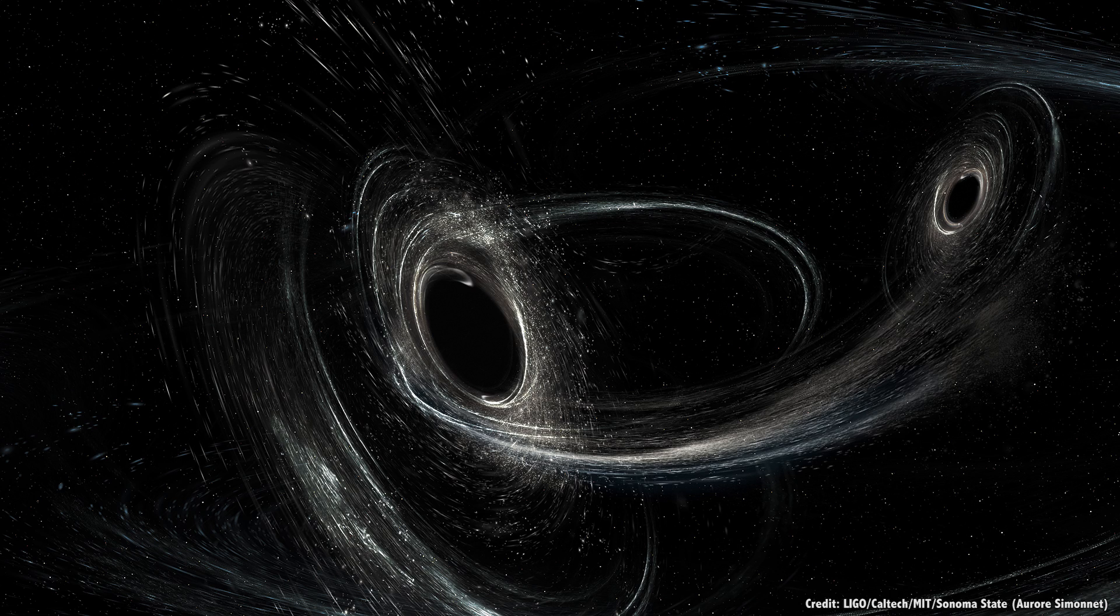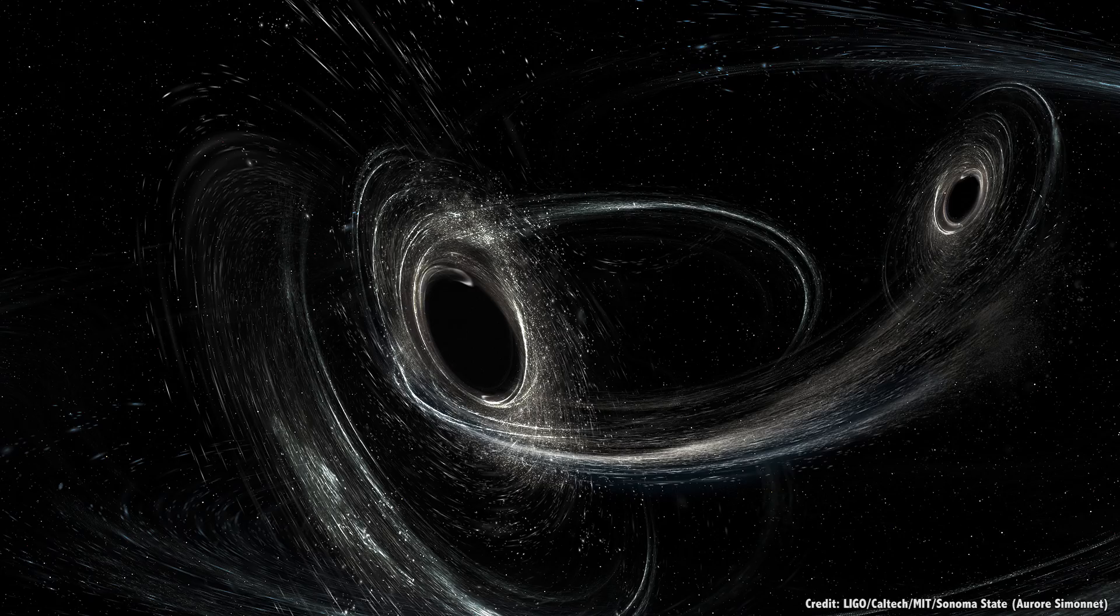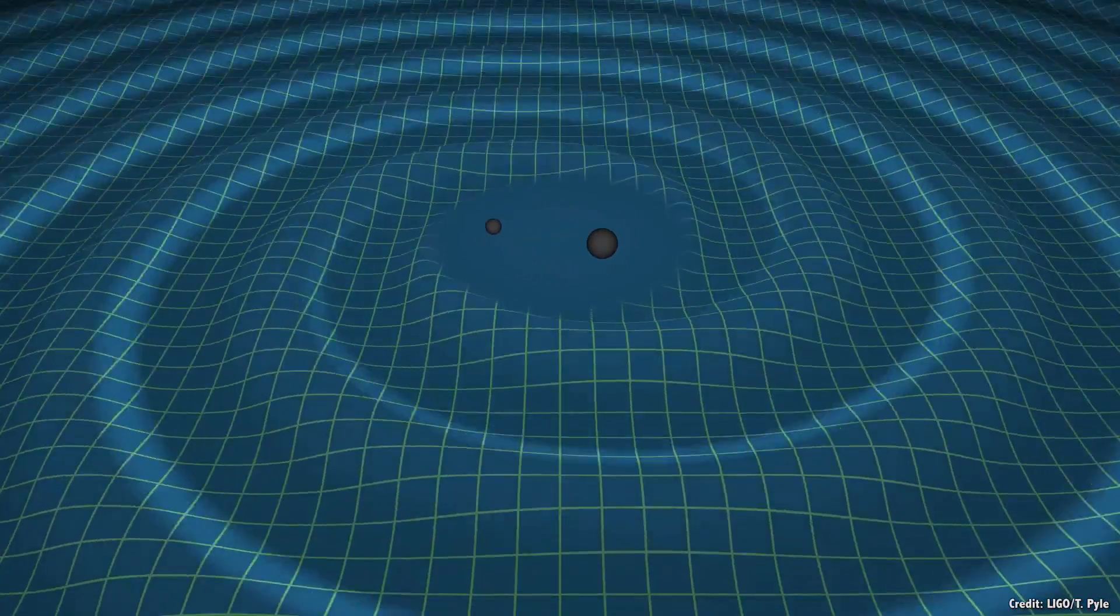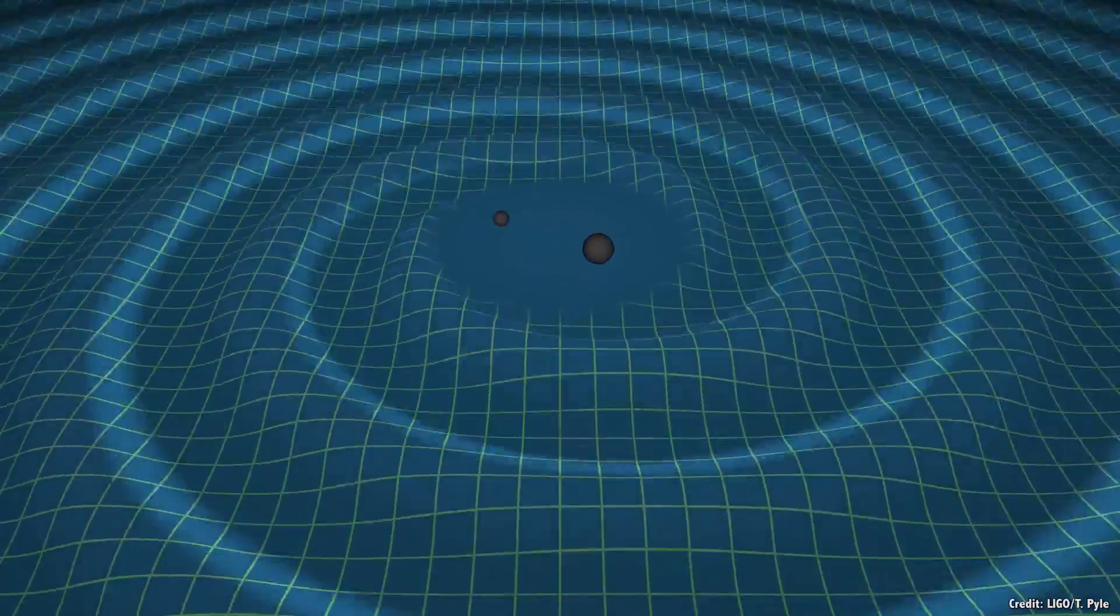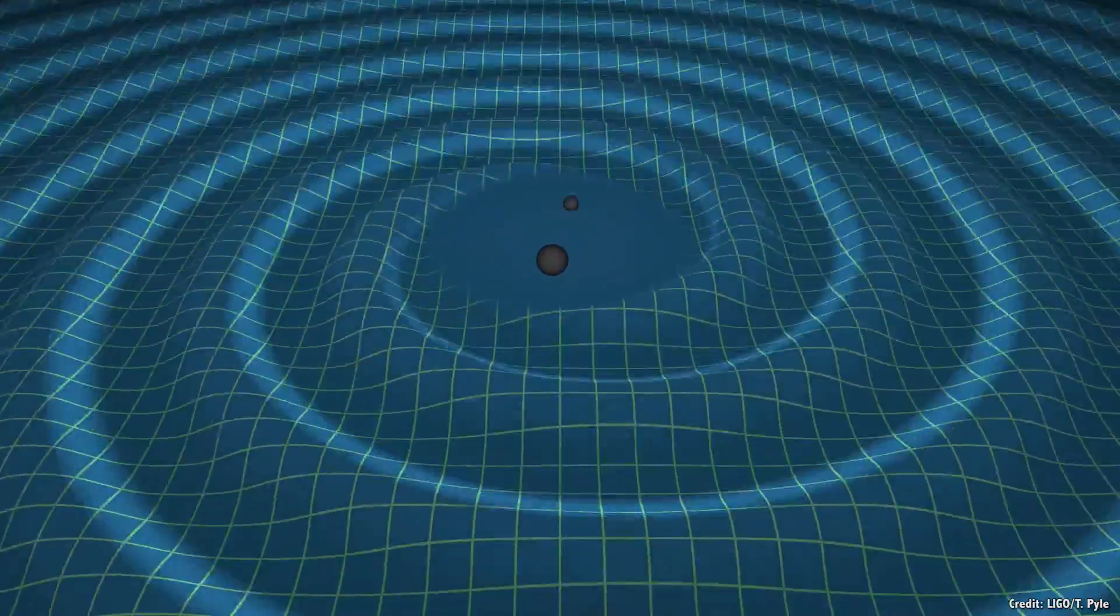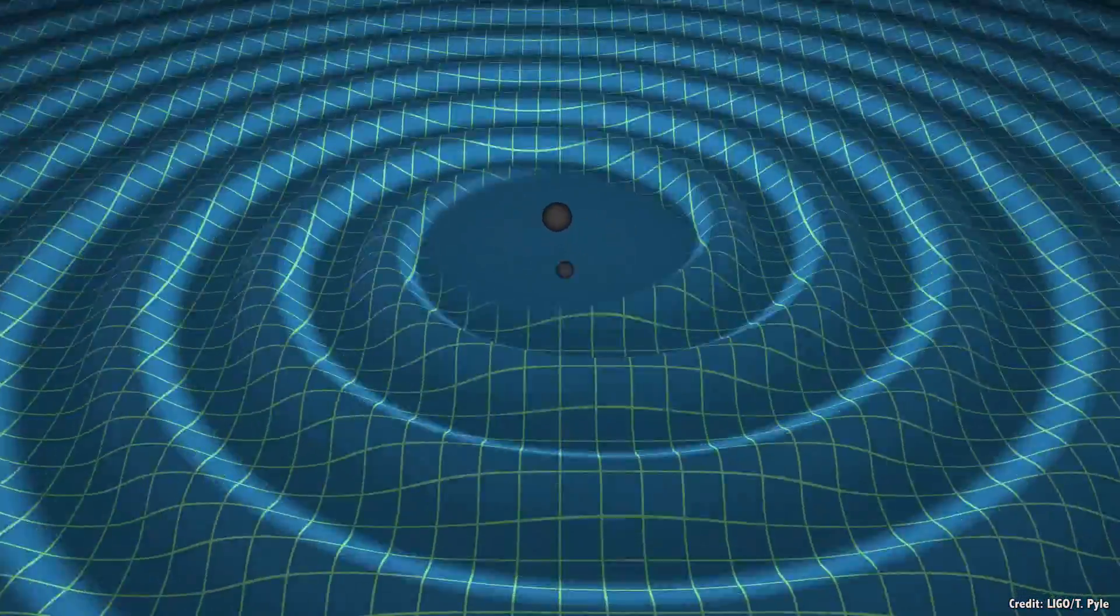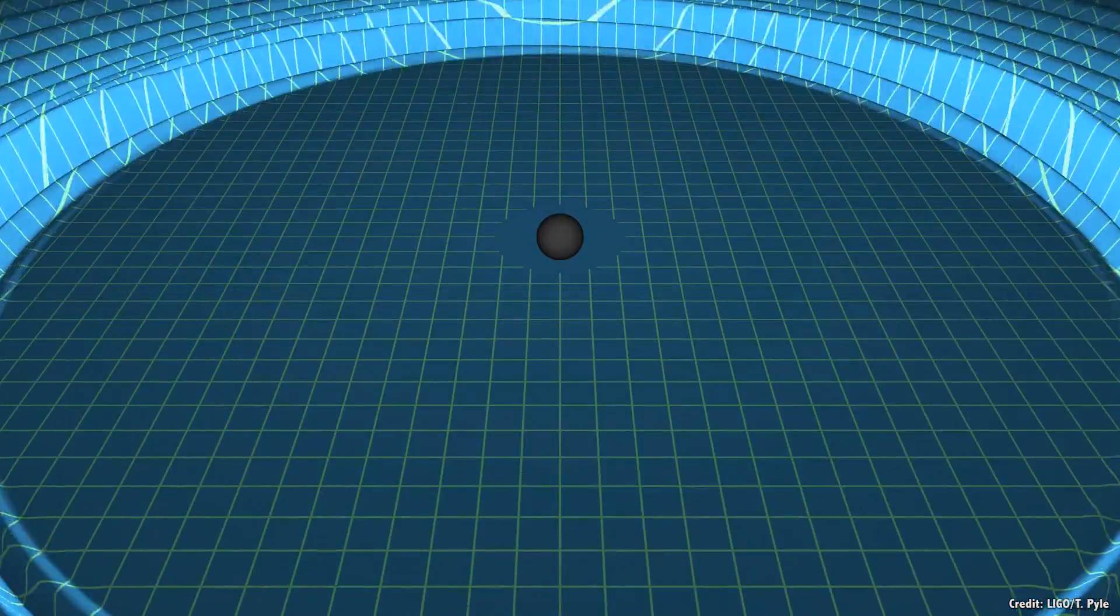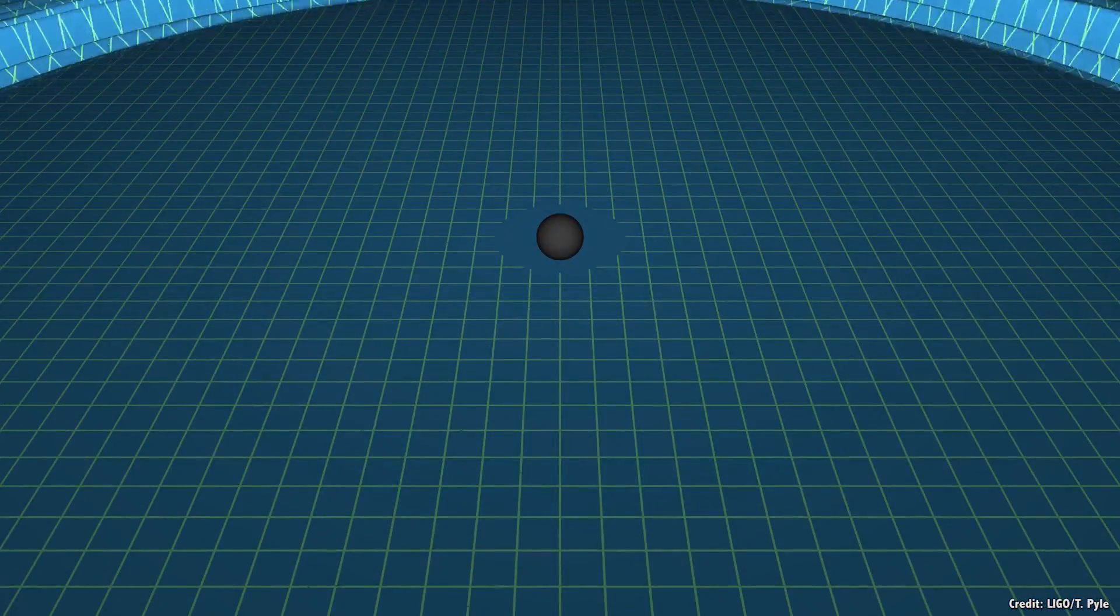As with the previous two detections, astronomers have determined that the waves were generated when two intermediate mass black holes slammed into each other, sending out ripples of distorted space-time. One black hole had 31.2 times the mass of the Sun, while the other had 19.4 solar masses. The two spiraled inward towards each other until they merged into a single black hole with 48.7 solar masses.